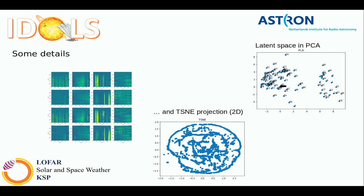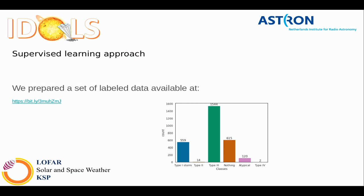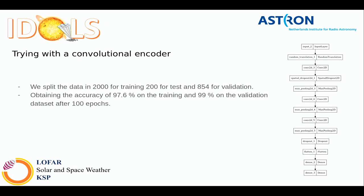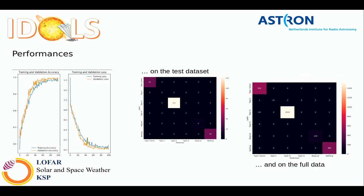We set up a supervised classifier last week, so this is very preliminary. The sample dataset includes Type 1 storms, Type 2, Type 3, nothing/atypical (uncategorizable events), and Type 4 — very unbalanced. We split into 2000 training, 200 test, and 154 validation samples. The network includes random translation in the time axis and spatial dropout to avoid overfitting. Results on the test set show Type 1 storm, Type 3, and nothing are well categorized, but Type 2 and atypical are less reliable.